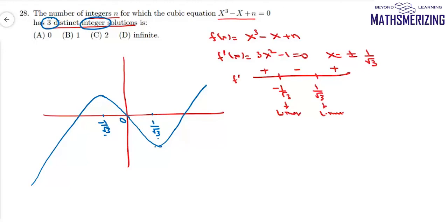So if this equation has three distinct integral solutions, then one of the solutions must be x equal to 0. So if I take x as 0, then the value of n should be 0.